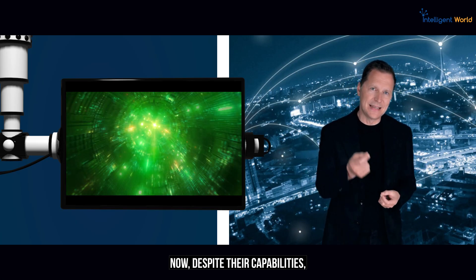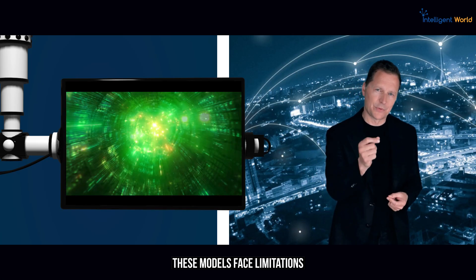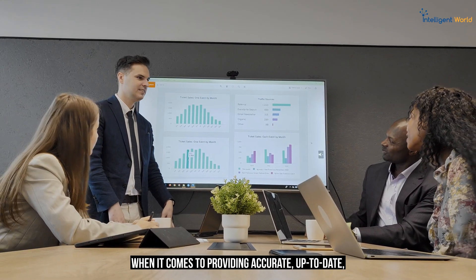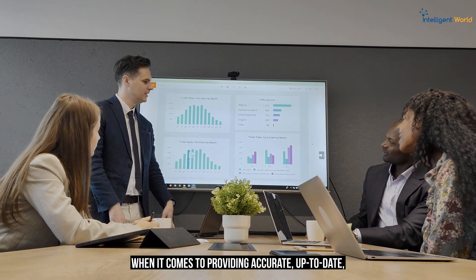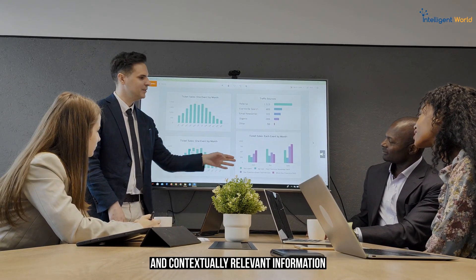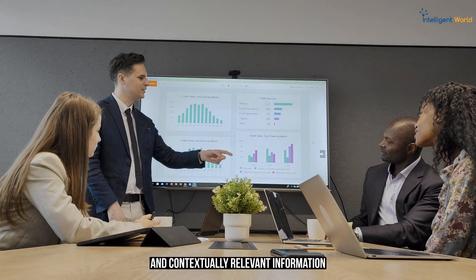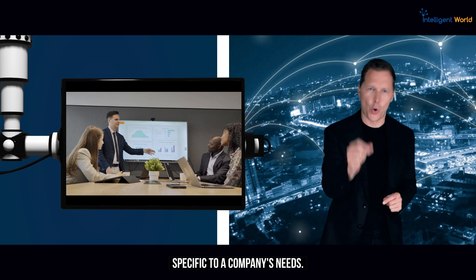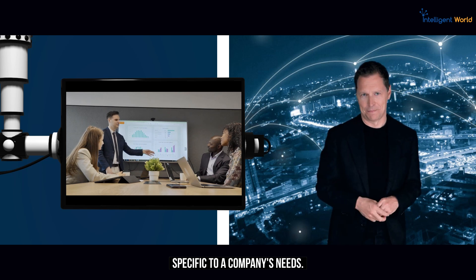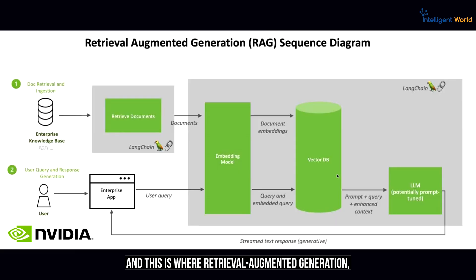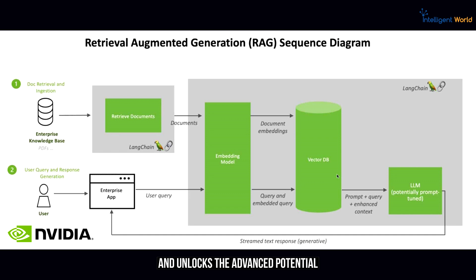Despite their capabilities, these models face limitations when it comes to providing accurate, up-to-date, and contextually relevant information specific to a company's needs. And this is where Retrieval Augmented Generation — RAG — comes in, as it addresses these critical shortcomings and unlocks the advanced potential for enterprise applications.